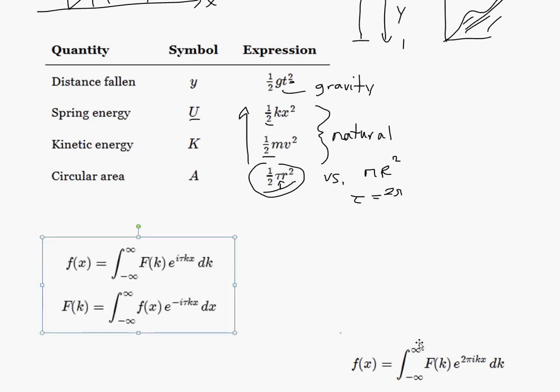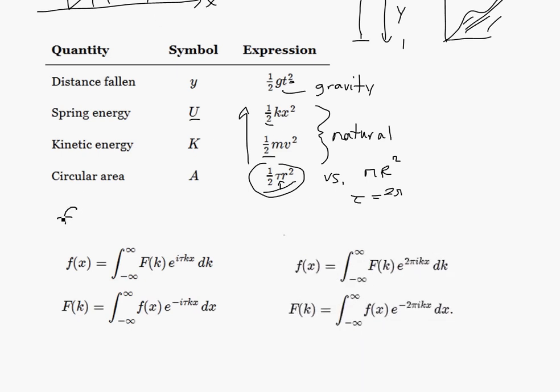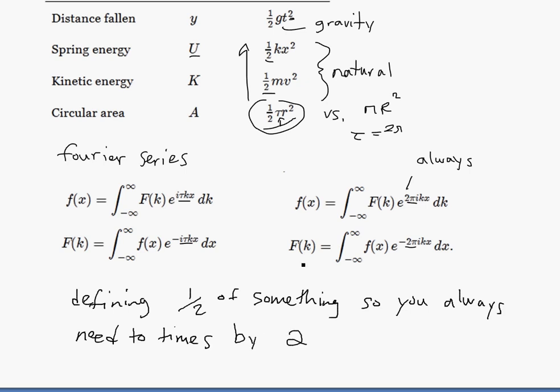And here, I'll show you this. This is a Fourier series. I'll explain later, but this is just really advanced math. So what you can see, this is the original. This is what people use. They always have this 2. Everywhere there's this 2 there. Always present. It just doesn't make any sense. Why do you need that? If you define it correctly with R, you never have this 2. It just doesn't make any sense. It's like defining half of something. You always need to times by 2. It just doesn't make any sense.